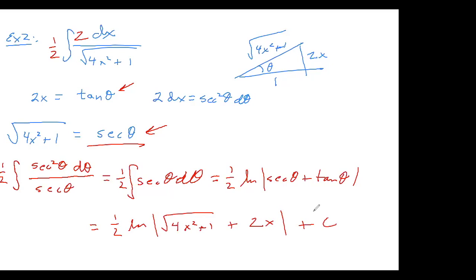That's a great example of an integral — dx over √(4x²+1) — that without this technique would be quite tricky. A little trig substitution and everything sorts itself out, which is very nice.